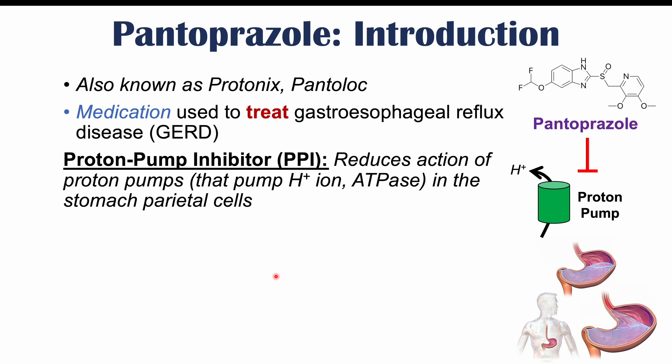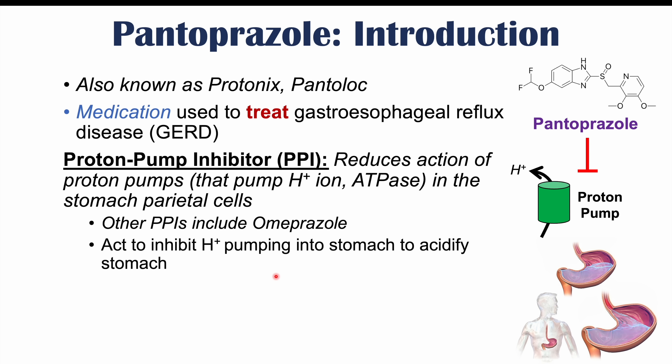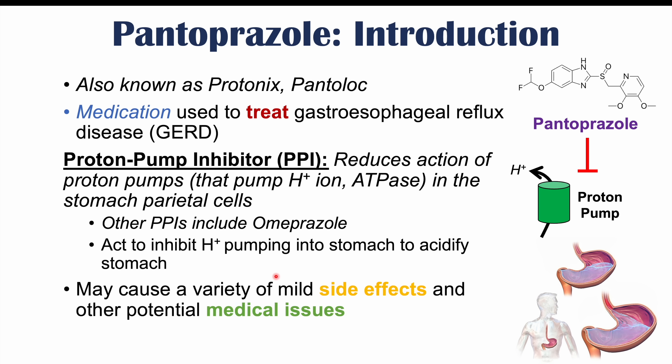Along with pantoprazole there are other PPIs including omeprazole. These PPIs act to inhibit H+ ion pumping into the stomach, leading to a reduction in stomach acidity, which means the pH of the stomach rises. The problem with pantoprazole and other PPIs like omeprazole is that they can cause a variety of mild side effects and other potential medical issues like nutrient deficiencies and infections.